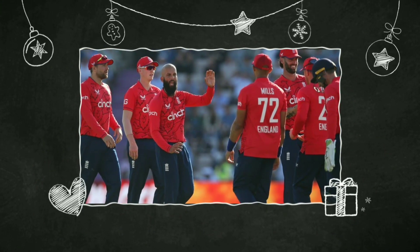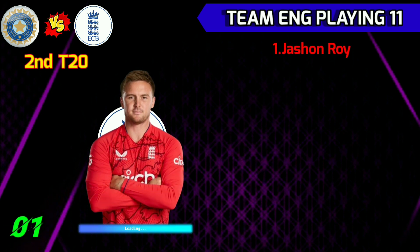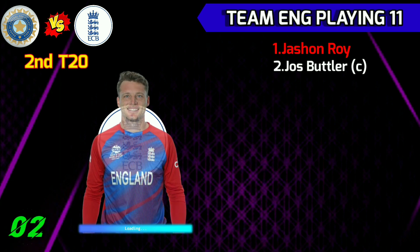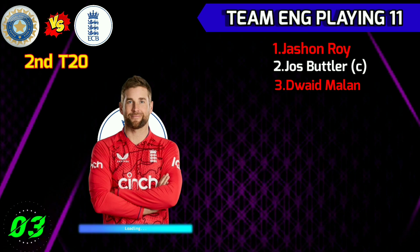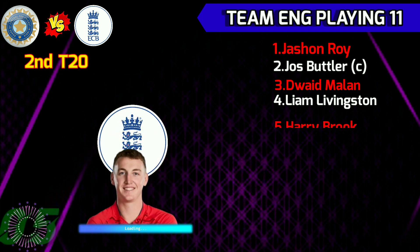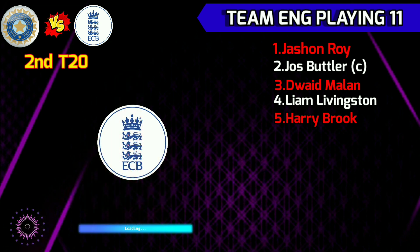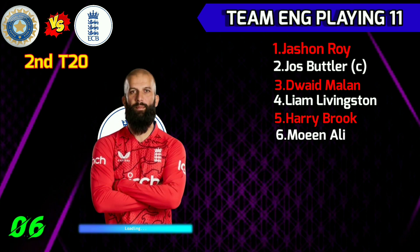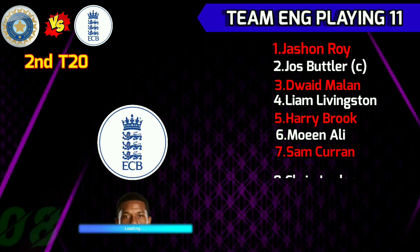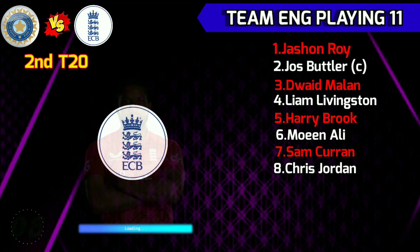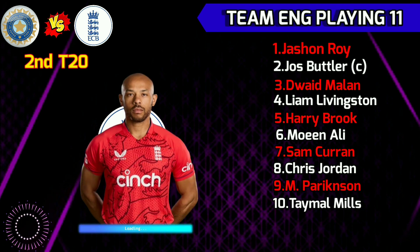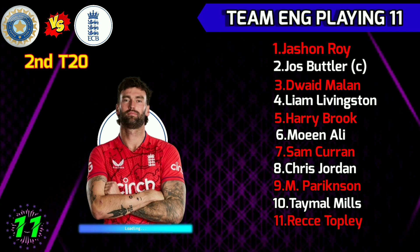England team's new playing eleven. Number 1: Jason Roy. Number 2: Jos Buttler. Number 3: Dawid Malan. Number 4: Liam Livingstone. Number 5: Harry Brook. Number 6: Moeen Ali. Number 7: Sam Curran. Number 8: Chris Jordan. Number 9: Matt Parkinson. Number 10: Tymal Mills. Number 11: Reece Topley.